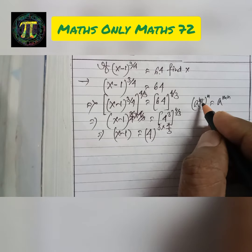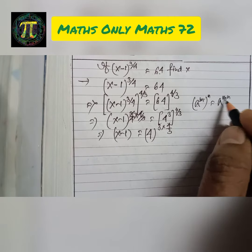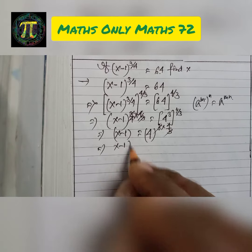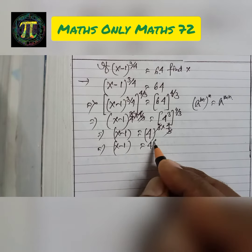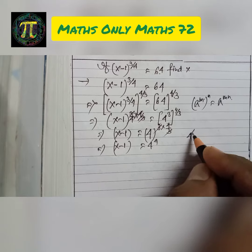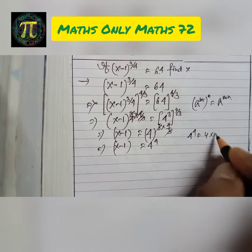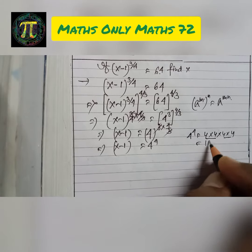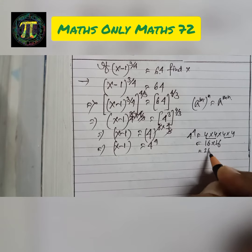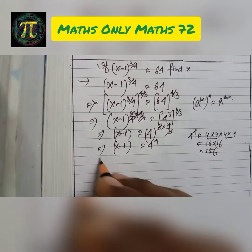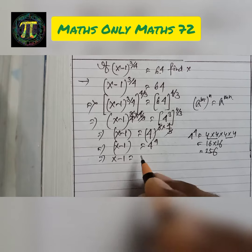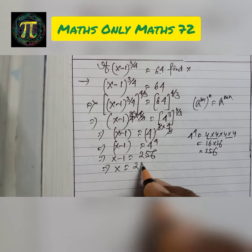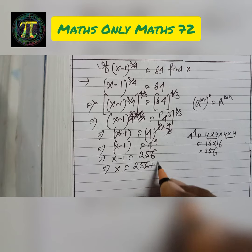Using a to the power m whole to the power n equals a to the power mn, x minus 1 equals 4 to the power 4. Now 4 to the power 4 is 4 into 4 into 4 into 4, which is 16 into 16, that is 256. So x minus 1 equals 256, and x equals 256 plus 1, which is 257.